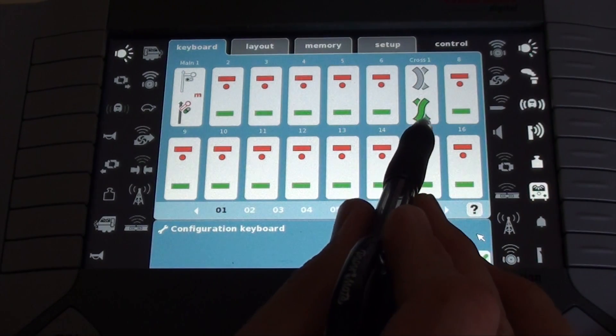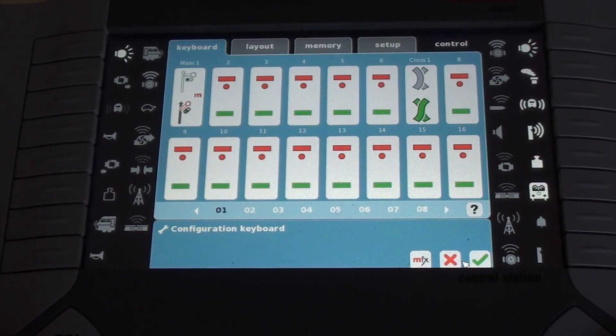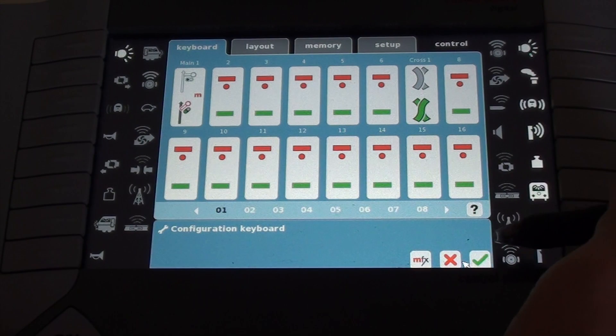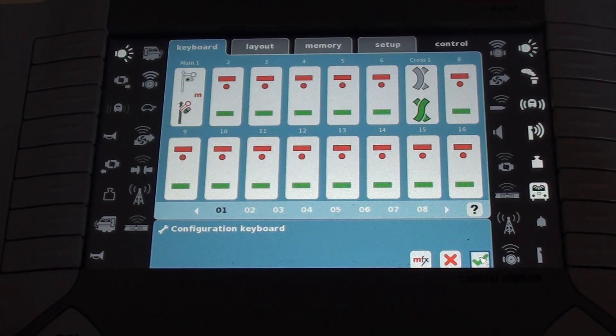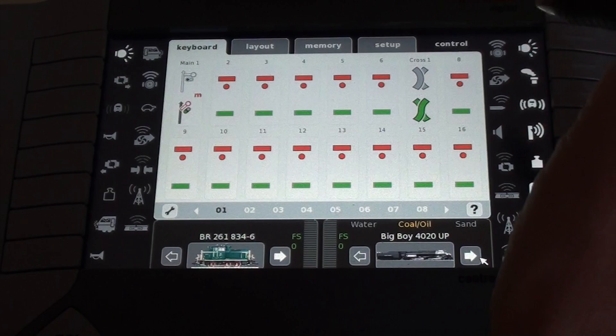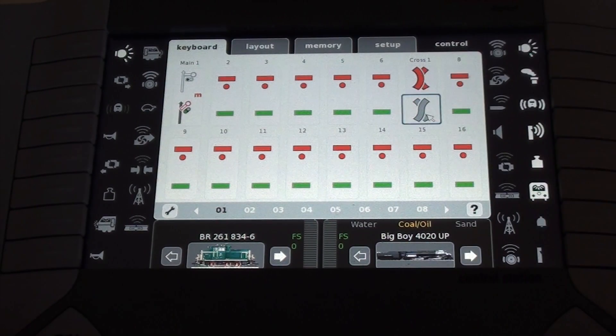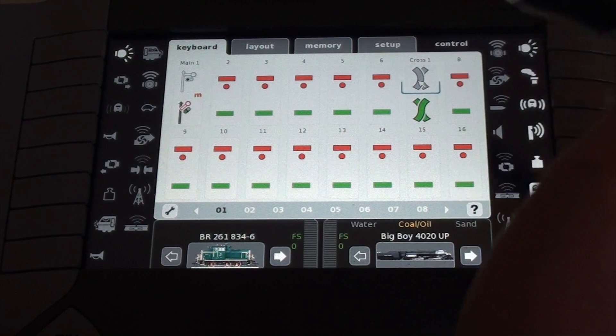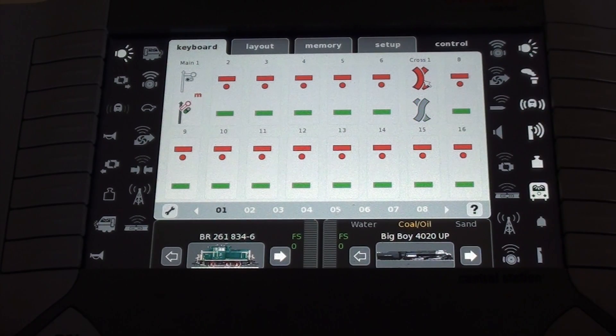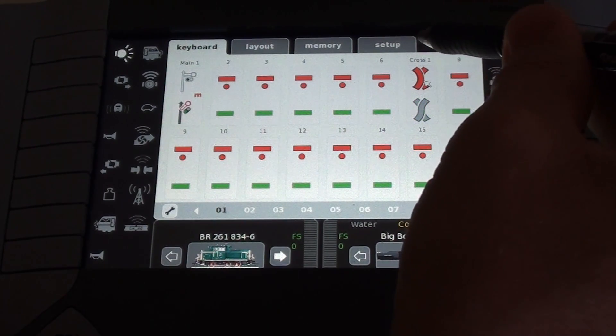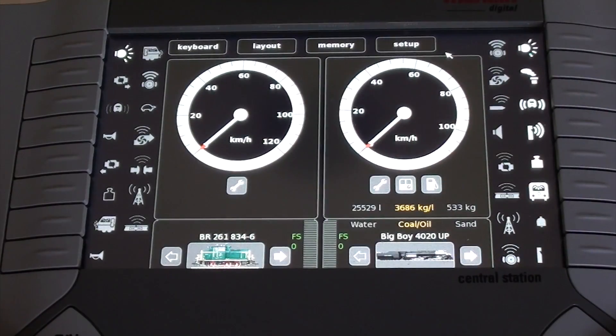So we like what we see. We hit the green check mark. And there at number seven, you see it. The central station just changed it to our crossing. We like it. We again hit the green check mark. And now we're back to our normal keyboard. And we can control the crossing. We hit control. And we're back to our normal screen.